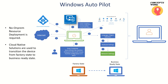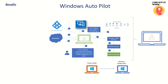Some key points: no on-prem resource deployment is required because Windows Autopilot is a cloud-native feature. By definition, it's a collection of technologies that can help you transition a factory state device into a business ready state device. The first benefit is no admin interaction is required on the device itself — you just get the hardware ID onboarded to your endpoint manager portal and ship the device to your user.